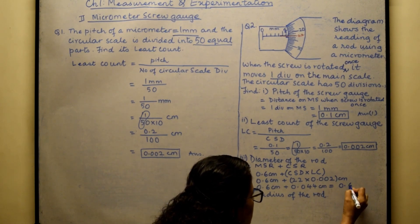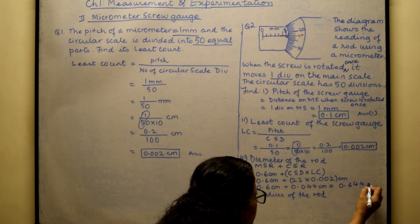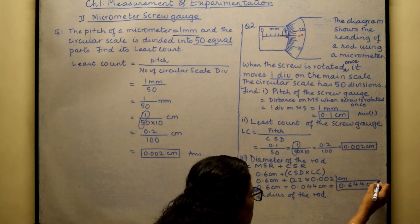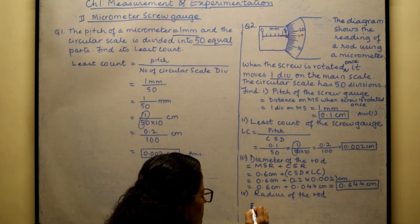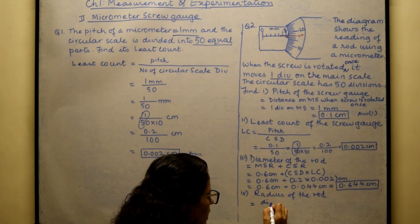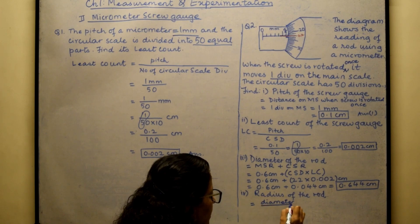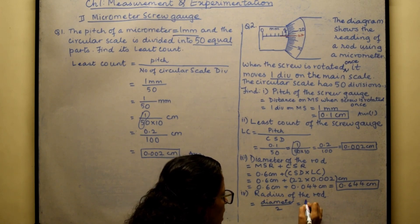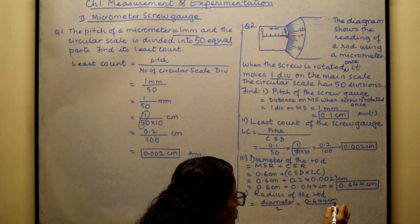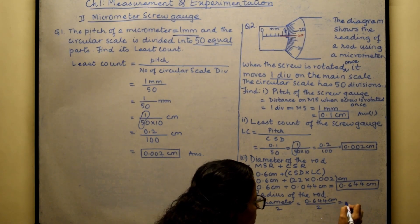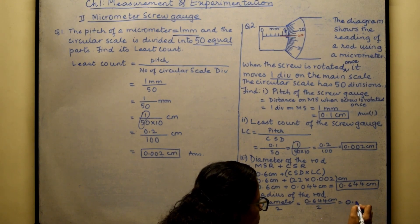The diameter of the rod is 0.644 centimeter. If we want the radius, it is diameter divided by 2: 0.644 ÷ 2 = 0.322 centimeter.